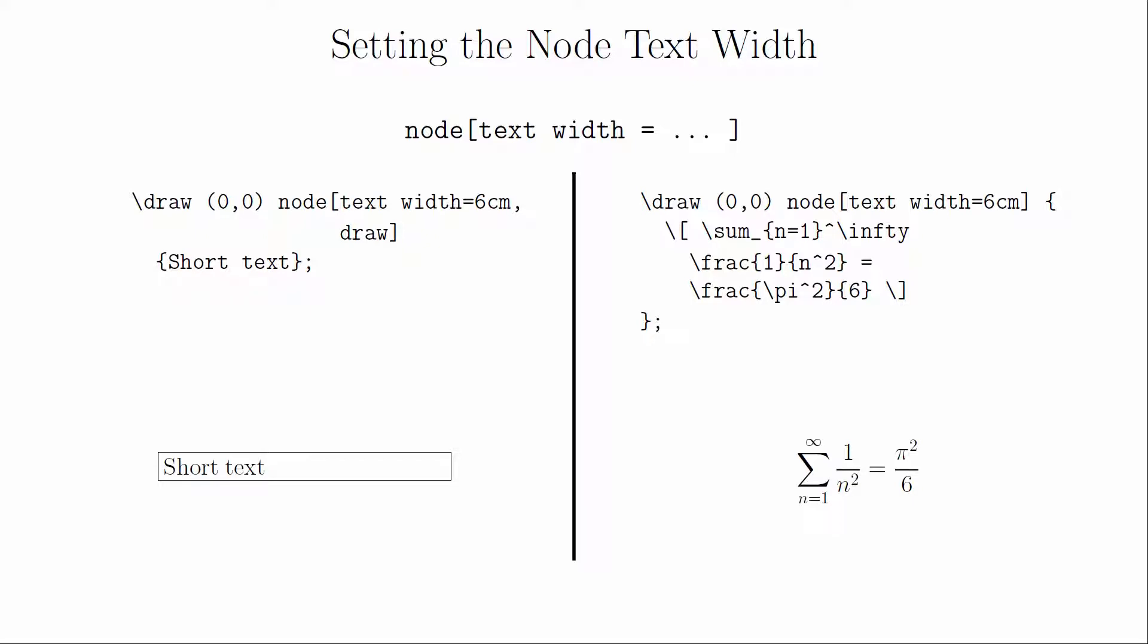In fact, if you set a text width for the node, you will be able to put even more things inside the node. This will open up itemize and enumerate environments as well as left, right, and center justification.